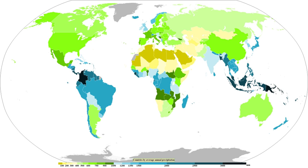Coalescence occurs when water droplets fuse to create larger water droplets, or when water droplets freeze onto an ice crystal, which is known as the Bergeron process. The fall rate of very small droplets is negligible, hence clouds do not fall out of the sky. Precipitation will only occur when these coalesce into larger drops. When air turbulence occurs, water droplets collide, producing larger droplets. As these larger water droplets descend, coalescence continues, so that drops become heavy enough to overcome air resistance and fall as rain. Raindrops have sizes ranging from 0.1 mm to 9 mm mean diameter, above which they tend to break up.